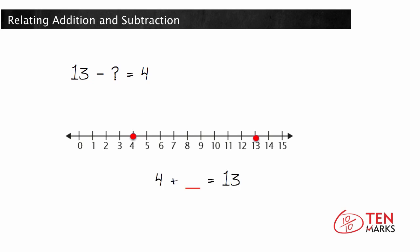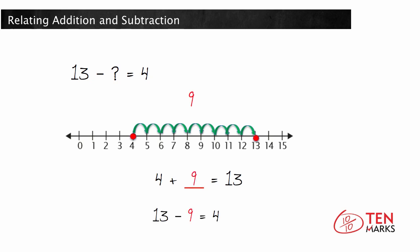4 plus what number equals 13? Count up from 4 to get to 13: 5, 6, 7, 8, 9, 10, 11, 12, 13. You counted 9 times. So 4 plus 9 equals 13. Therefore, 13 take away 9 equals 4.